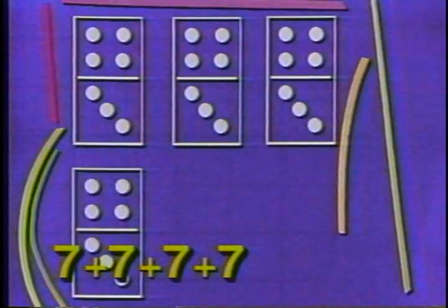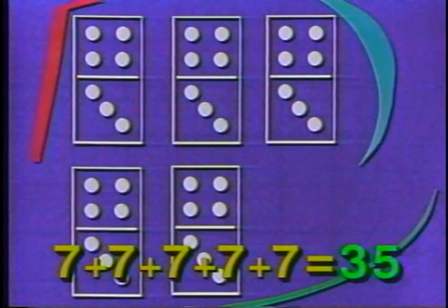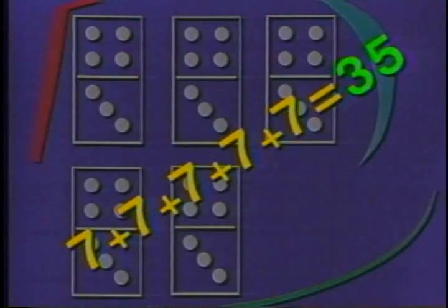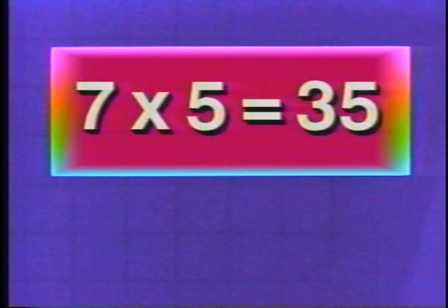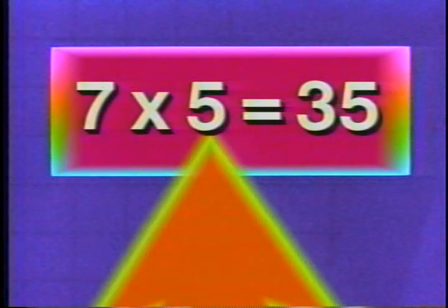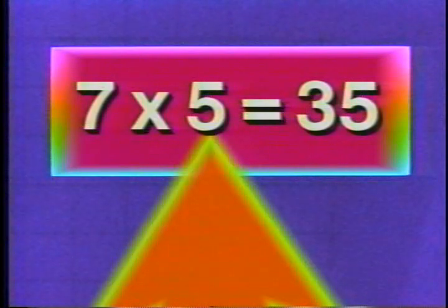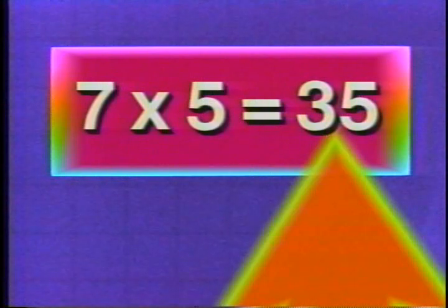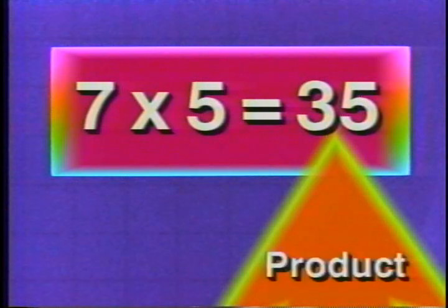Watch with all your might. 7 plus 7 plus 7 plus 7 plus 7 is 35. Five groups of 7 are 35. 7 times 5 is 35. 7 is your first factor — it's where we start. Times 5 is the other factor — you can tell them apart. Now 35 is the product, the answer.